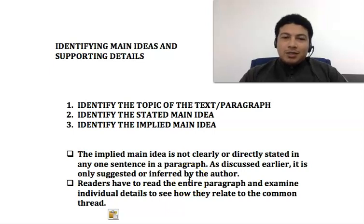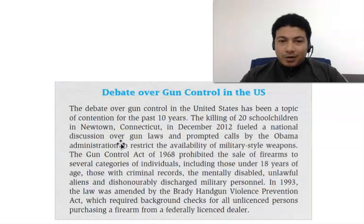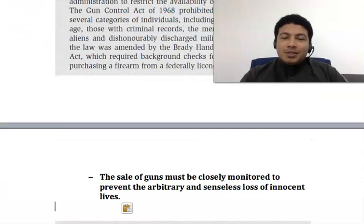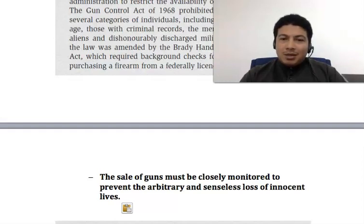You can pause the video and read the paragraph and try to decide what indirect point the author wants to make. What can you infer? Indirectly, the author wants to tell us that the sale of guns must be closely monitored to prevent the arbitrary and senseless loss of innocent lives. That means the government has to really think about controlling the selling of guns in the United States to avoid more people being killed.